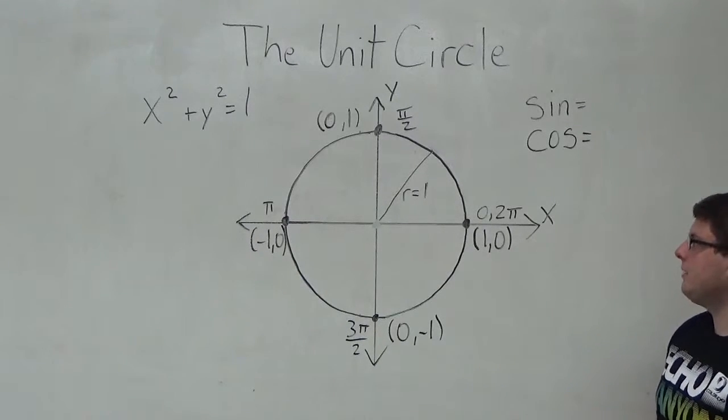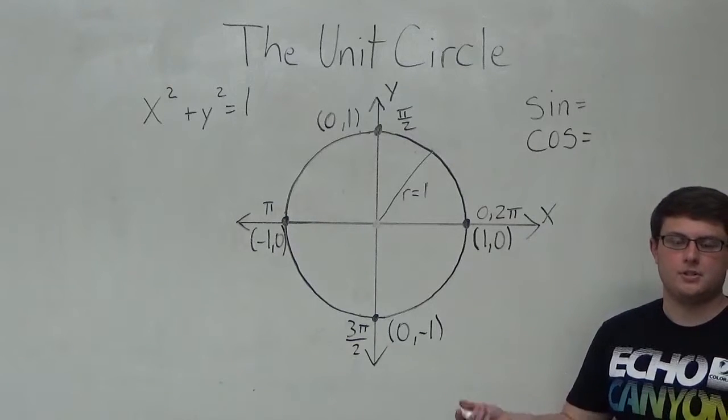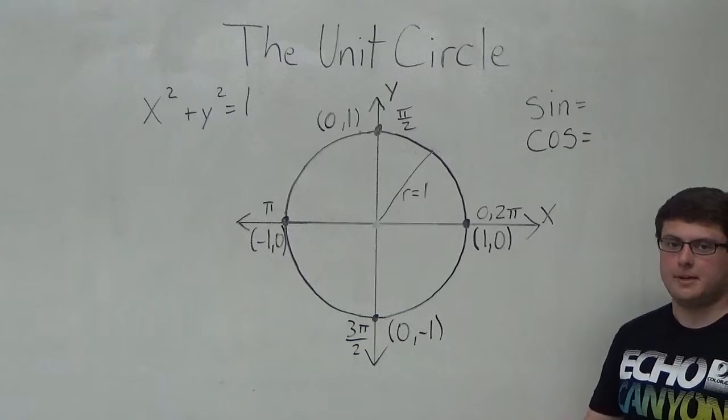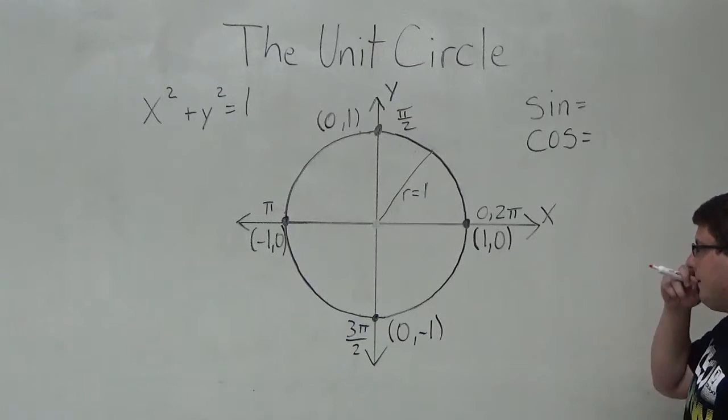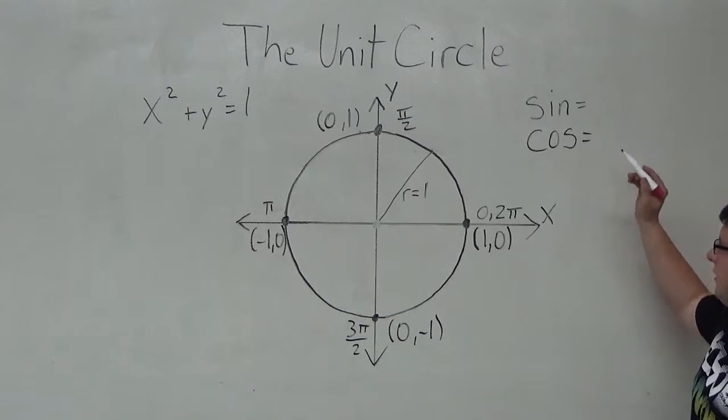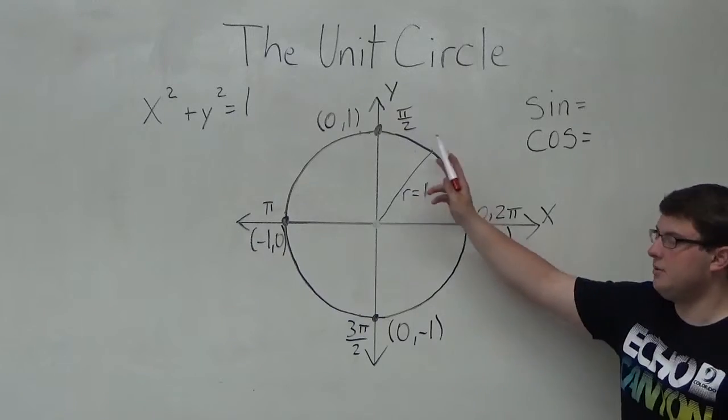We can use this circle as a way to find the relationships between various trigonometric ratios. The first thing we can do is find the value of sine or cosine using the unit circle.